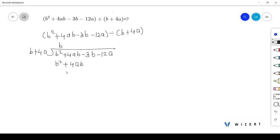Do that subtraction. This is minus minus, so b² minus b² is 0. Then 4ab minus 4ab is 0.